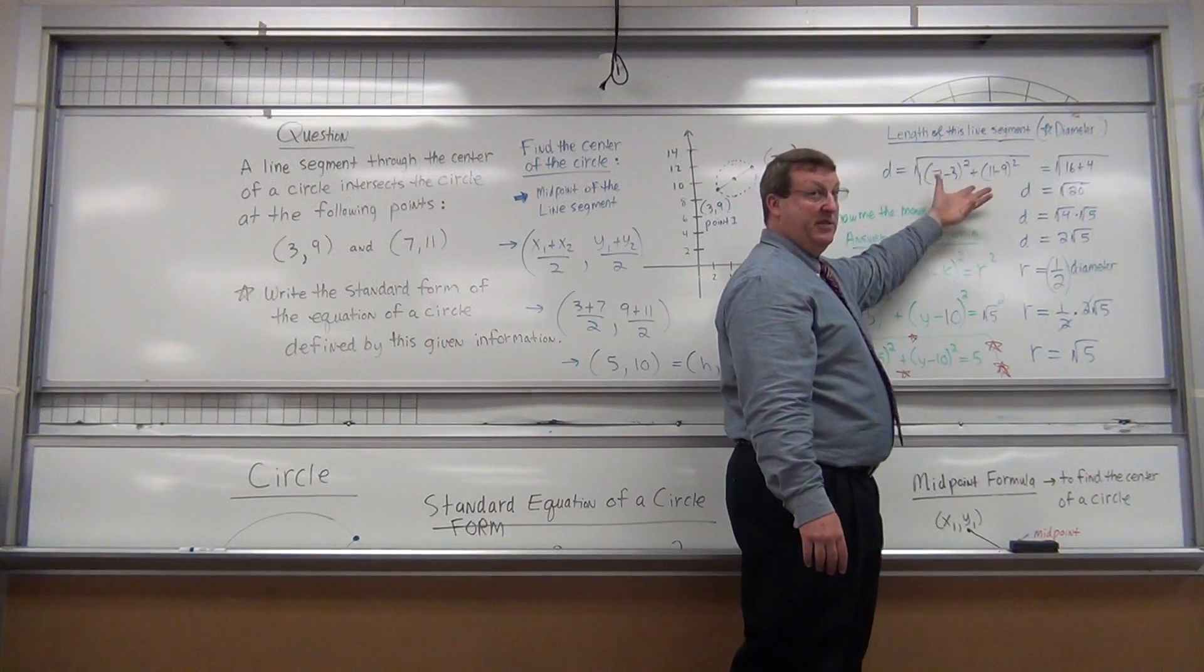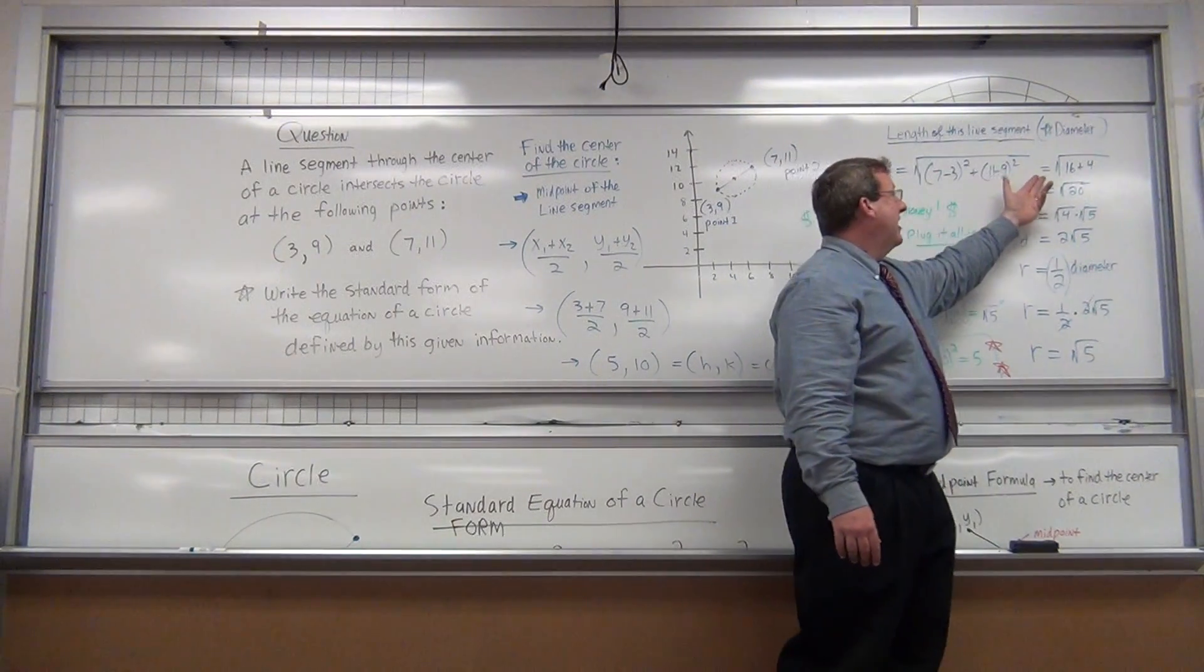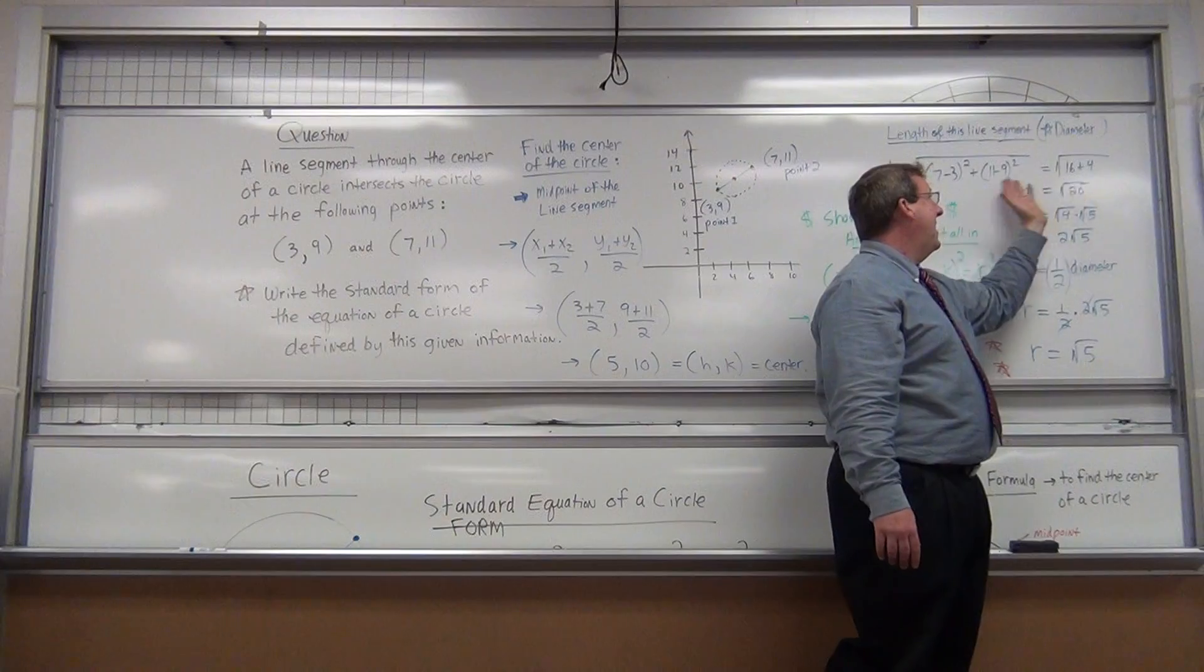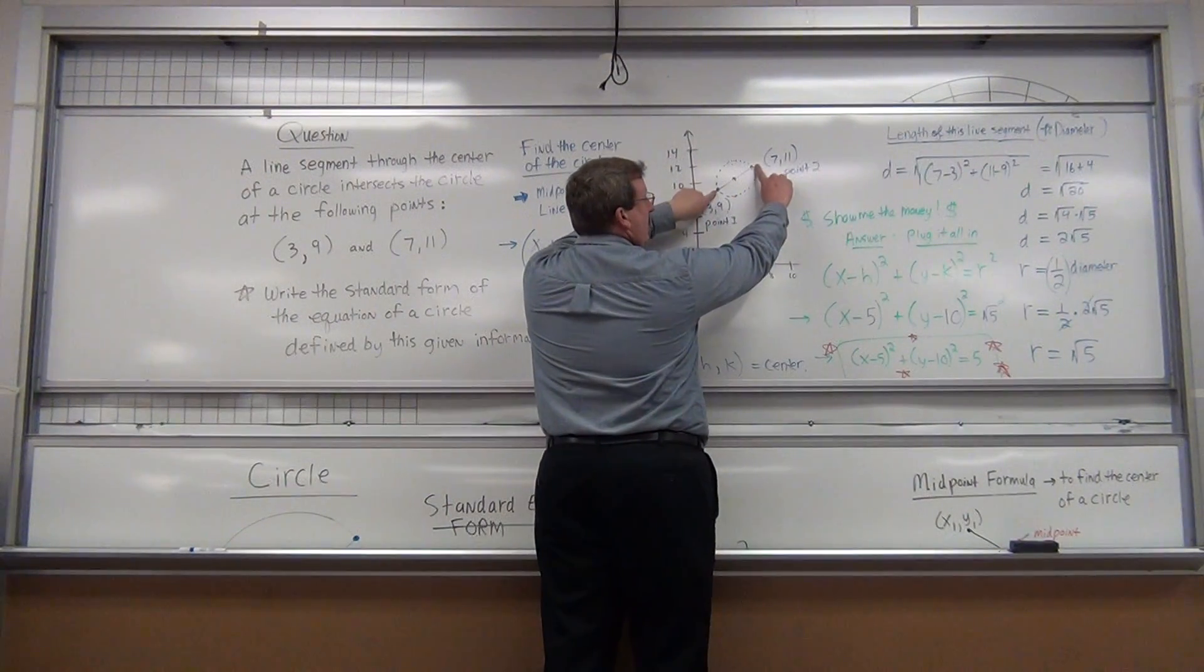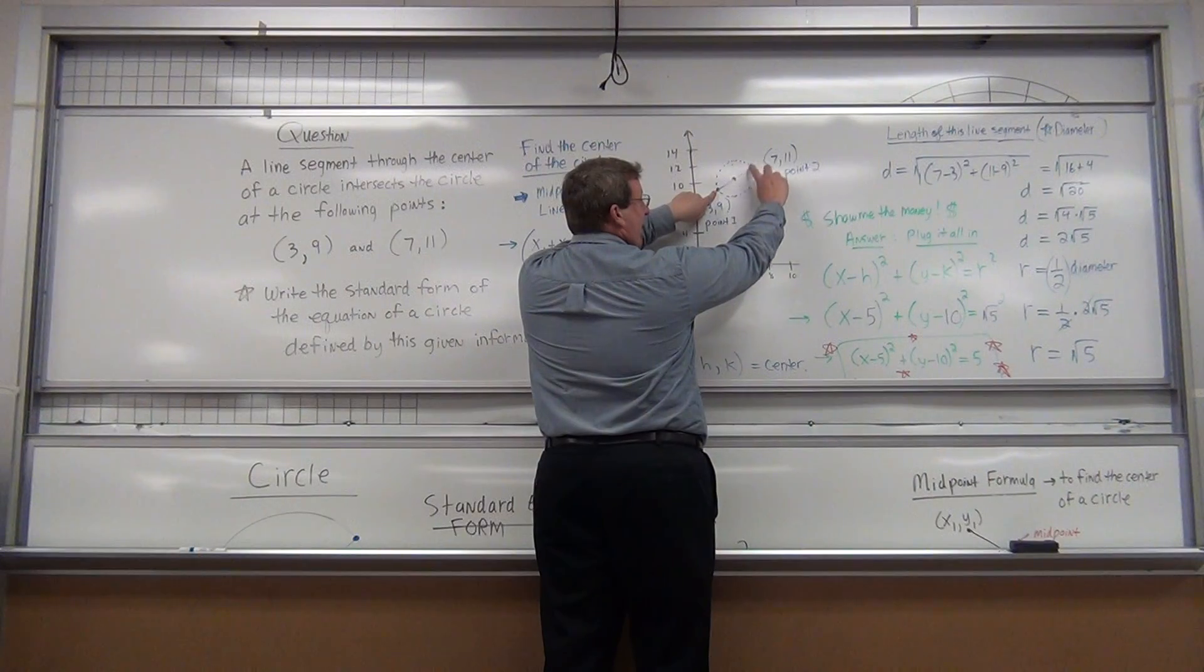X2 - X1 squared. I come through here, do some math with these ordered pairs, and I get this distance, which happens to be the diameter. I just need half of it.